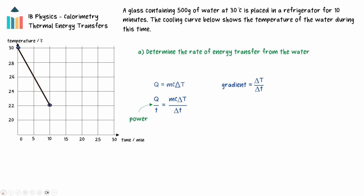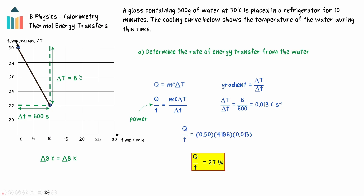Using the first and last points of the line, we can find that the change in temperature is 8 degrees Celsius, and the time period is 10 minutes, or 600 seconds. Notice that the units of Kelvin and Celsius are both present here. The magnitudes of these temperature scales are equal, and since the formula only requires the change in temperature, there is no need to convert the units of Celsius into Kelvin. This gives a gradient of 0.013 Celsius per second. Substituting in the remainder of the given values and solving gives a rate of energy transfer of 27 watts.